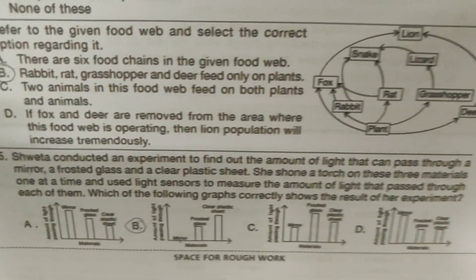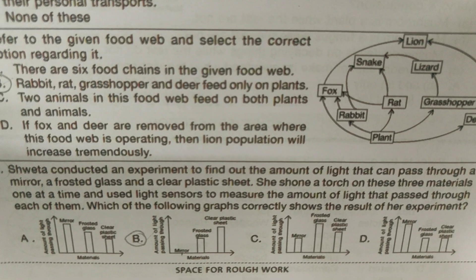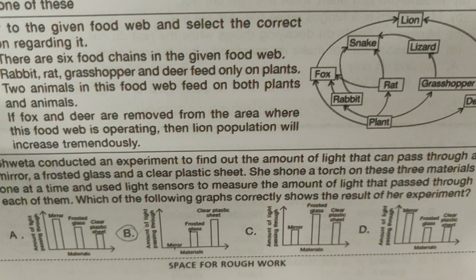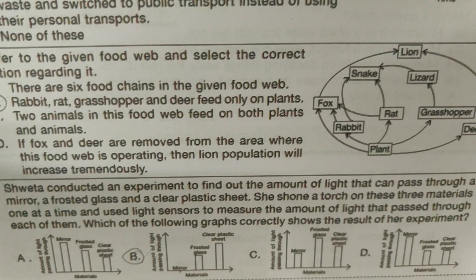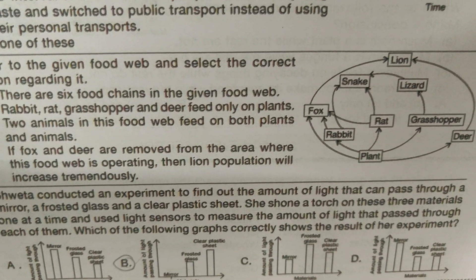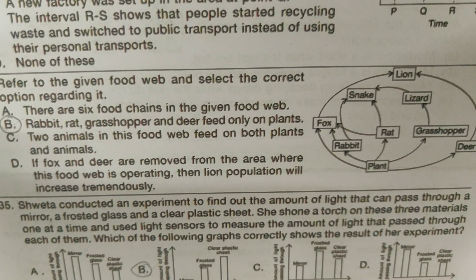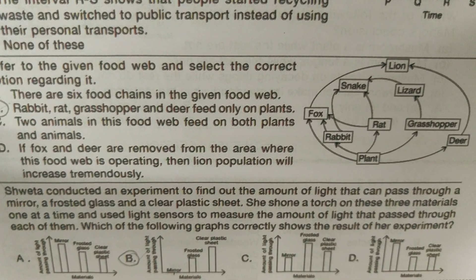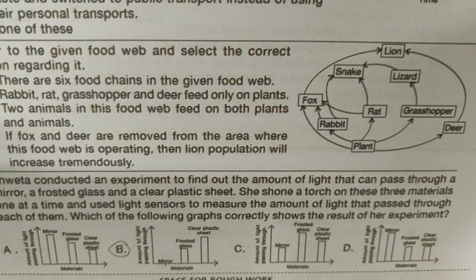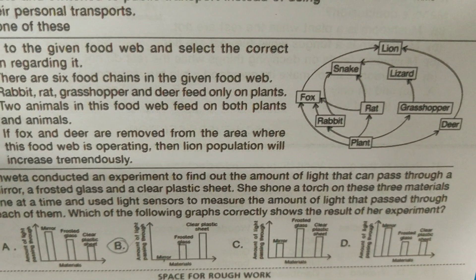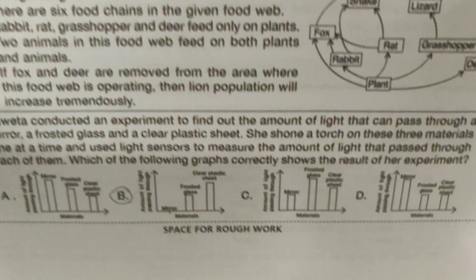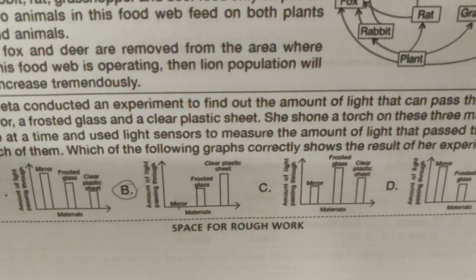Shuta conducted an experiment to find out the amount of light that can pass through a mirror, a frosted glass, and a clear plastic sheet. She shone a torch on these three materials one at a time and used light sensors to measure the amount of light that passed through each. Which of the following graphs correctly shows the result? It's C — and it's very easy.